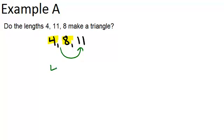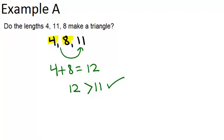So let's check: 4 plus 8 equals 12, and 12 is greater than 11. So that means we're good, and this does make a triangle. The answer would be yes.